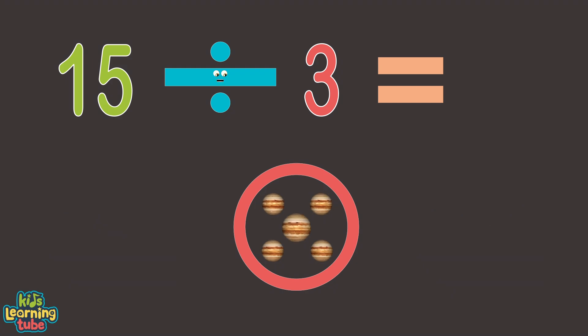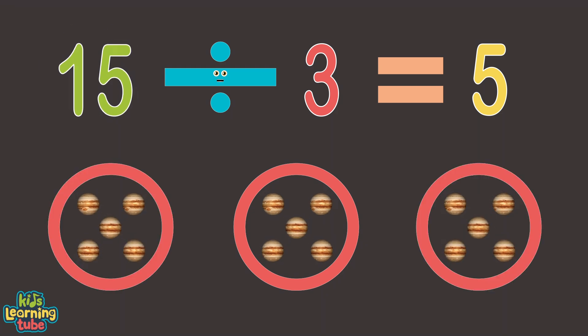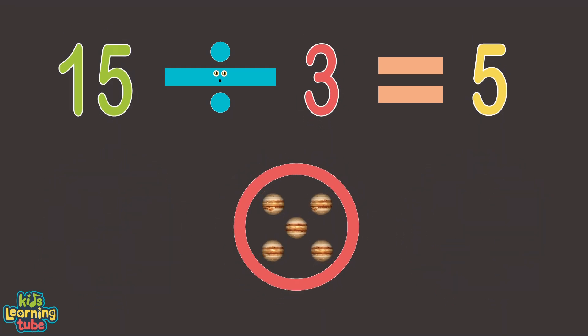1, 2, 3, 4, and 5. 5 is the amount of times 3 can go into 15 after we divide. The number of dots in one circle when we split 15 into 3. 5 is the amount of times 3 goes into 15 equally.